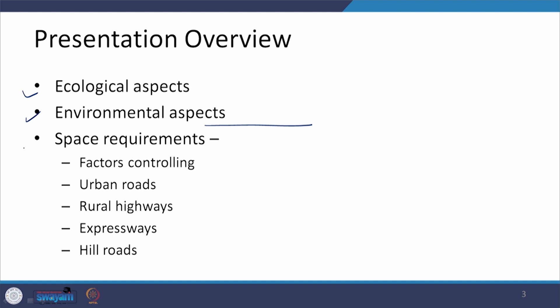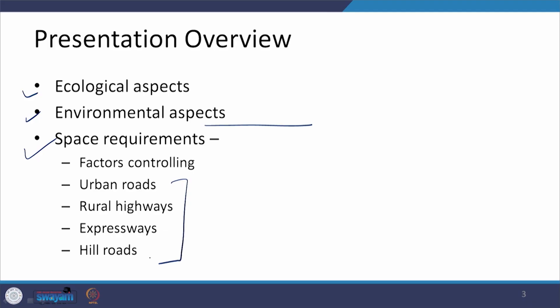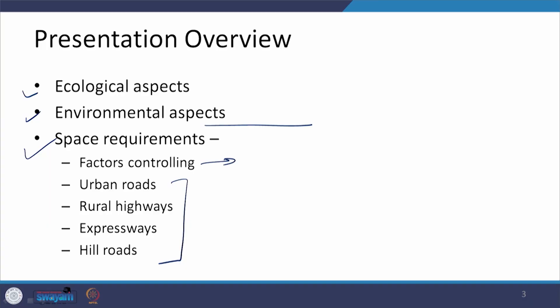Then we will try to see what amount of space is required to be provided for different types of facilities — urban roads, rural highways, expressways, or hill roads. Before going into those widths, we will also look at the controlling factors which define how much space is required and why that space is required.